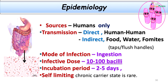The mode of infection is feco-oral route, with an incubation period ranging from 2 to 5 days. One good news is that this disease is self-limiting, which is why chronic carrier states are rarely seen. If Shigella organisms are recovered from any person, it always indicates pathology — it cannot exist as a commensal in the gut at all.